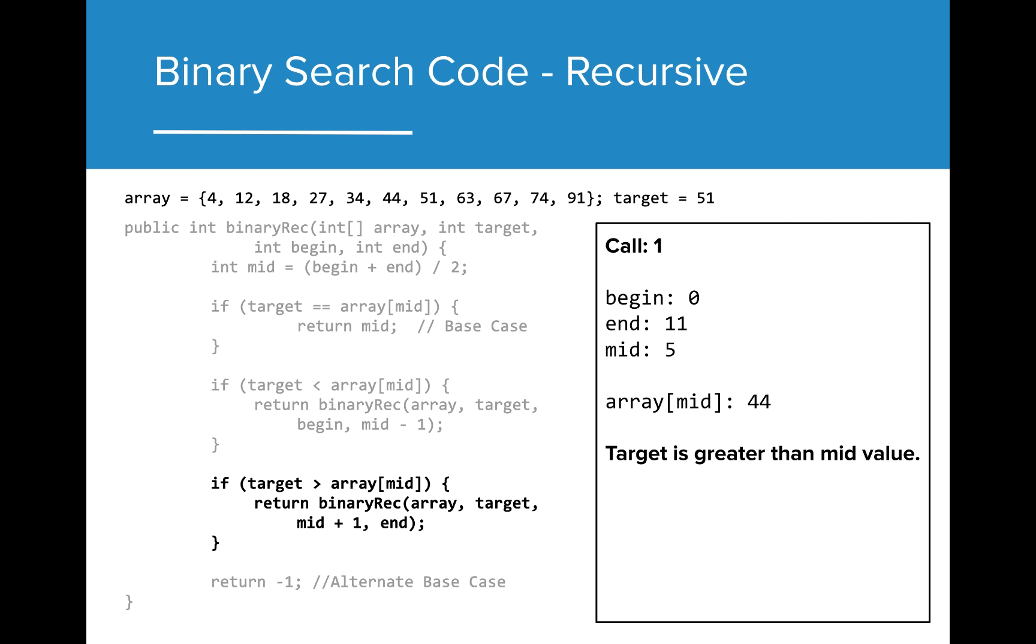Our recursive call passes the original array, the target value, but then updates the starting point as it makes the call.